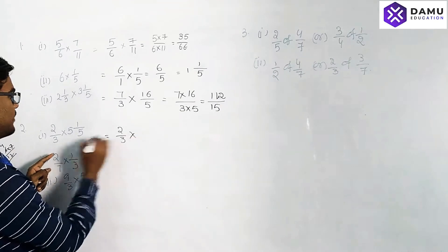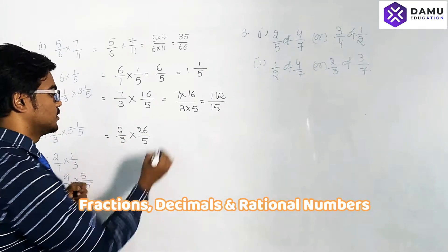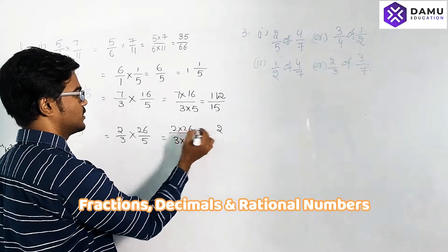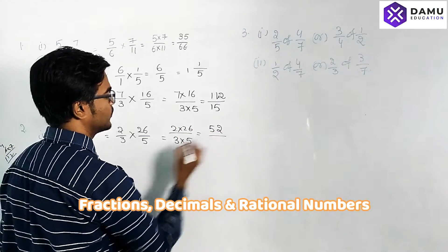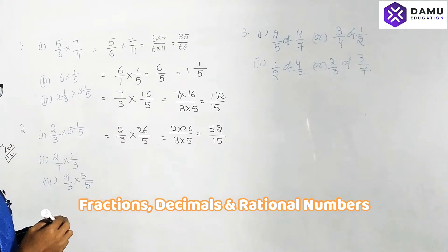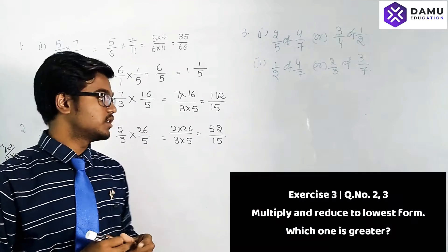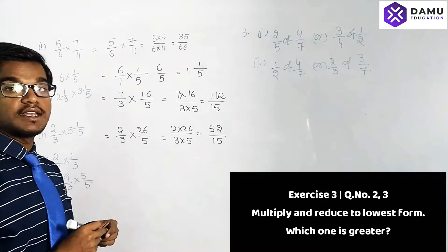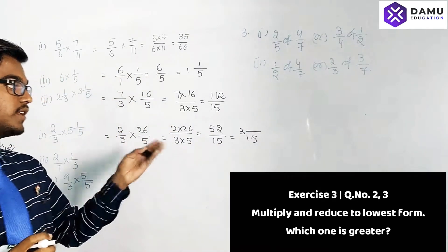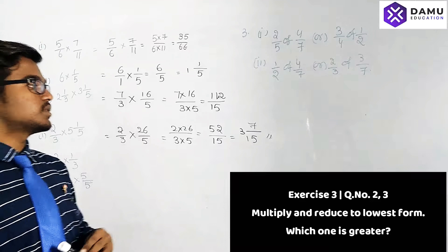Our next question is simplify and reduce into lowest form: 2/3 into 26/5. We get 3 into 5 in the denominator, which is 15, and 2 into 26 in the numerator, which is 52. So the result is 52/15. We can reduce this into a mixed fraction: the nearest multiple of 15 below 52 is 45 (15×3=45), so 52 minus 45 is 7, giving 3 and 7/15.